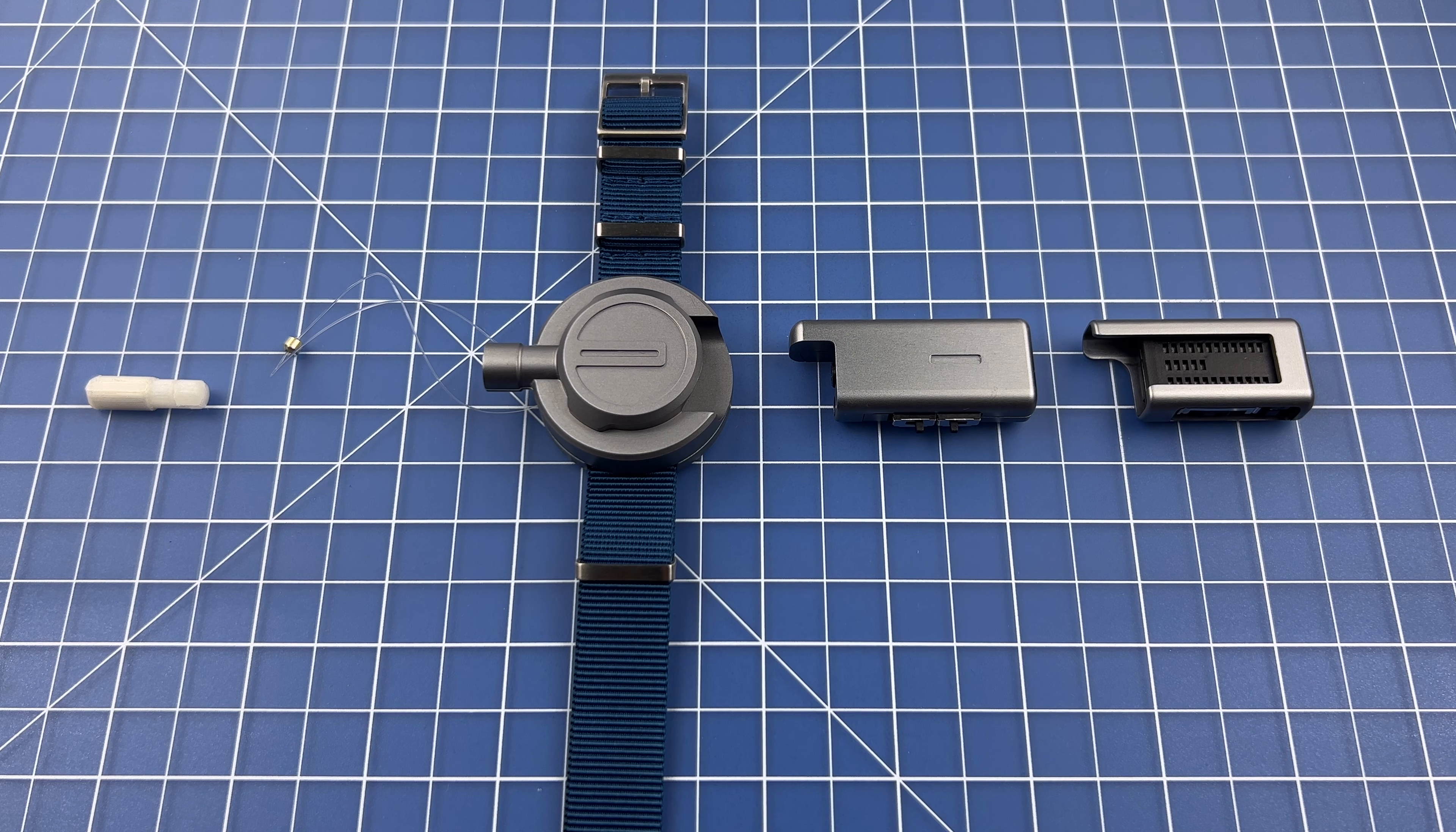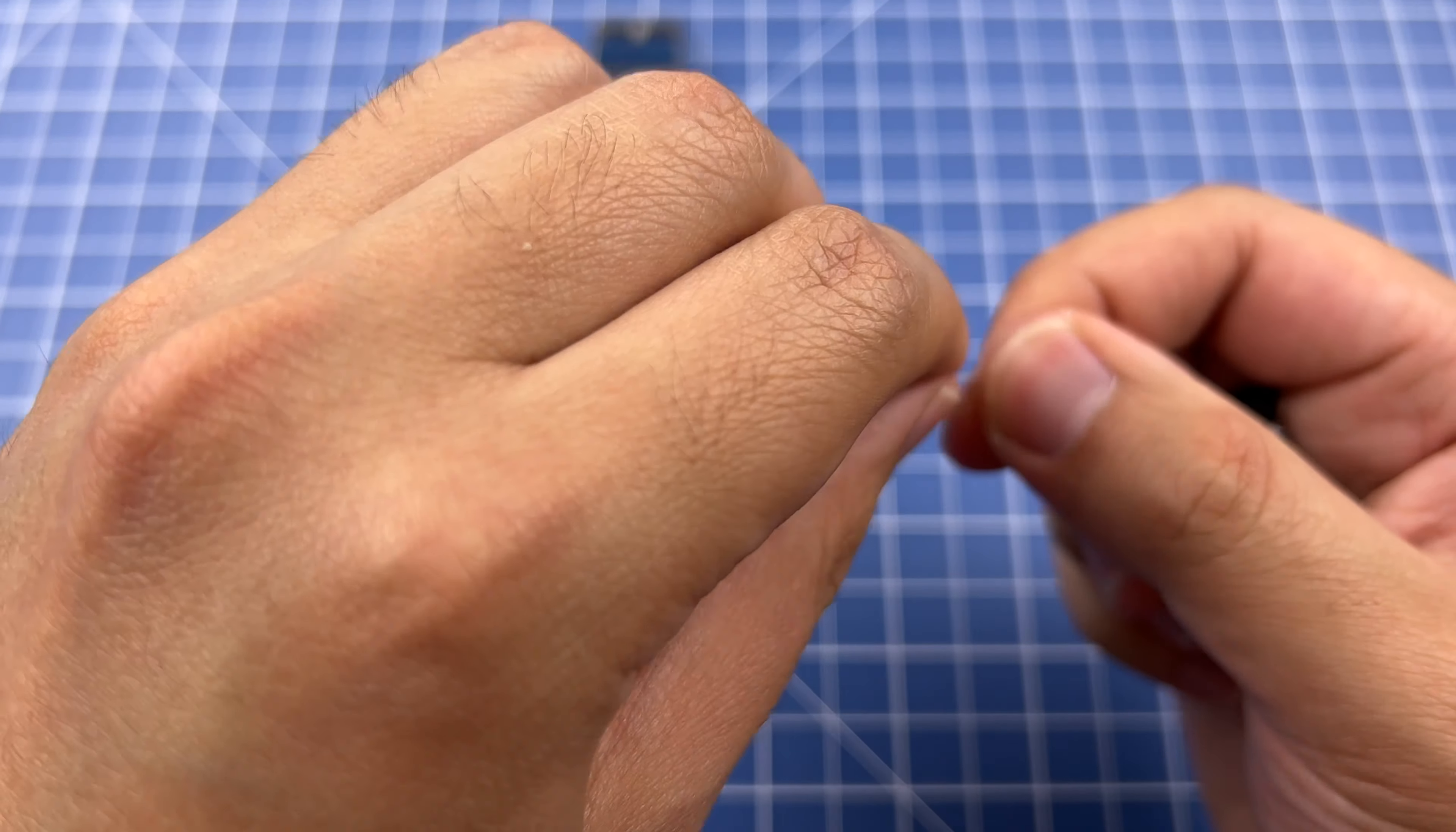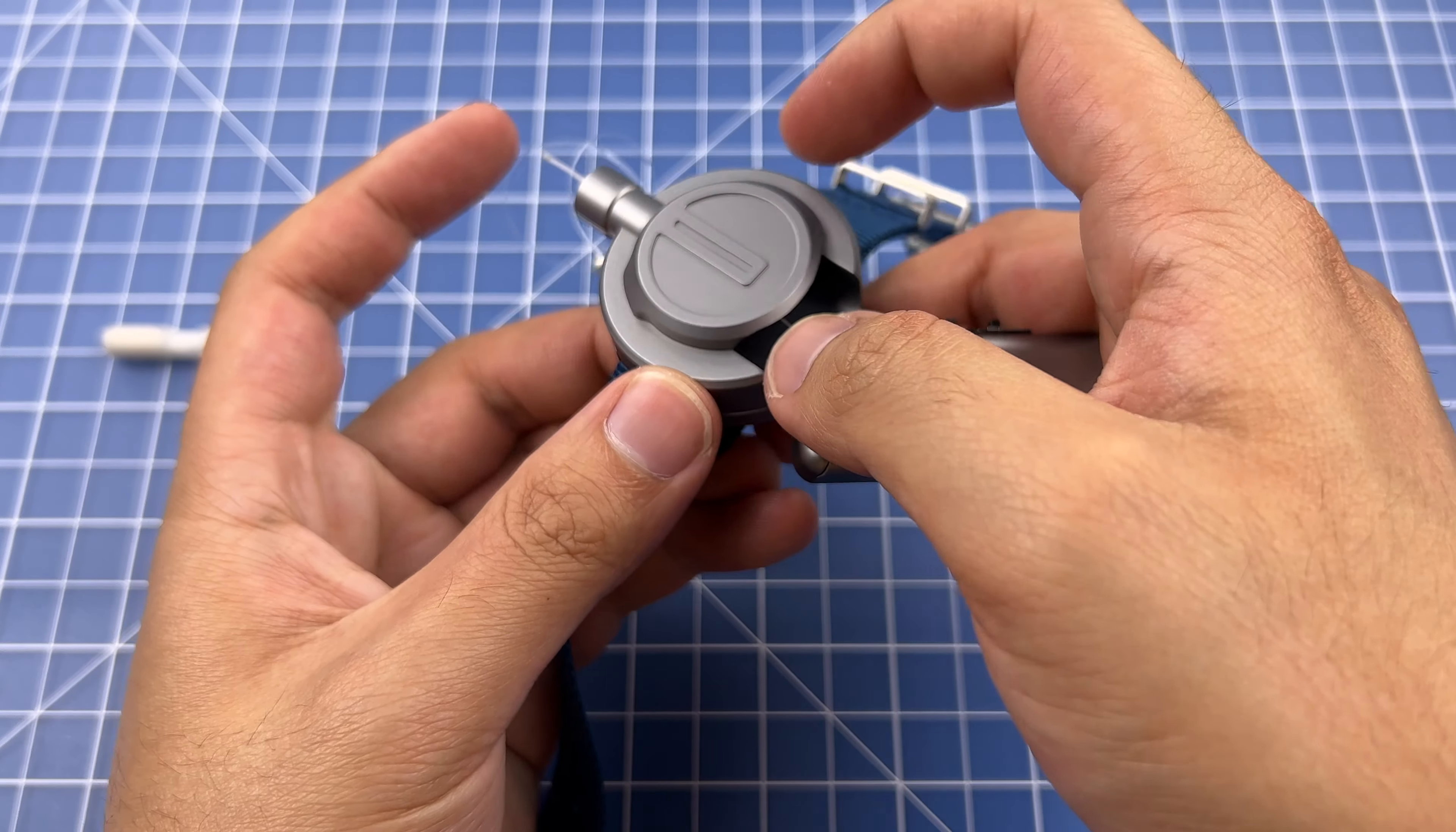The first thing we're going to do is show you how to load the thread cartridge and the projectile. To load them, take the thread cartridge and pull out the end of the thread. You'll notice the end has a loop, which we're going to use to hook onto the projectile. First, pull it as straight as possible, and thread this through the hole in the middle of the Magnus. Keep it as straight as possible so it's easy for the thread to go through all the way.